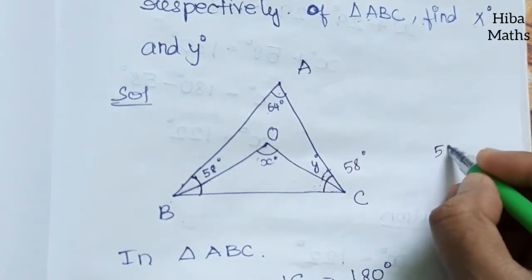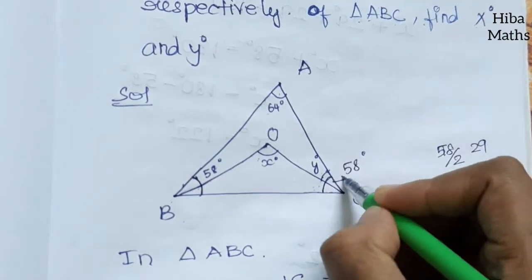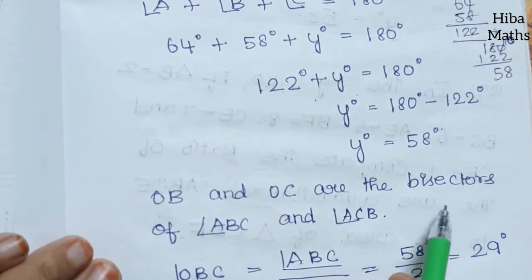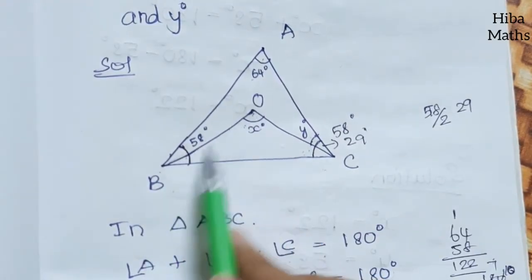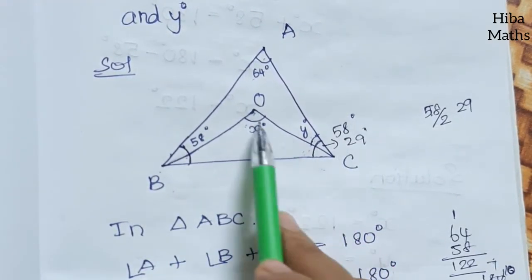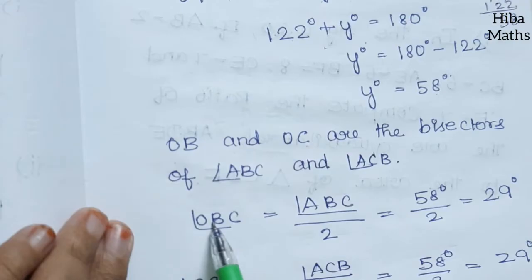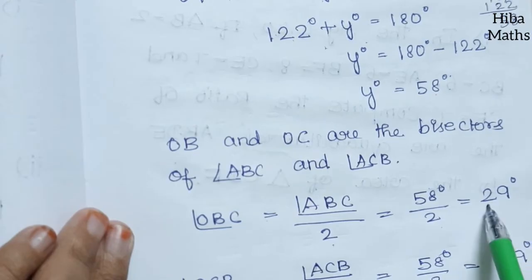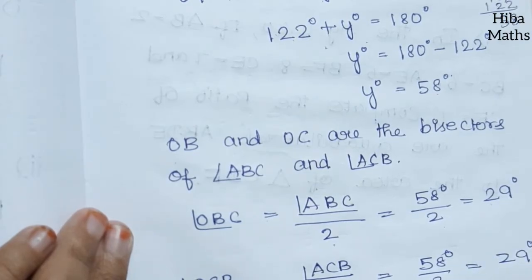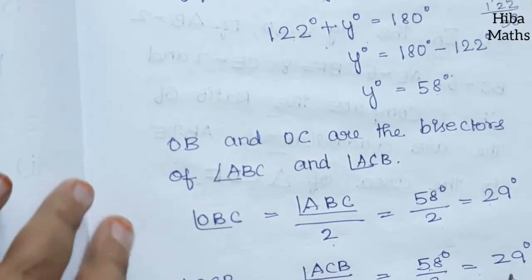Now, since OB and OC are the bisectors of angles ABC and ACB respectively, angle OBC equals angle ABC divided by 2, which is 58 divided by 2, equal to 29 degrees. Similarly, angle OCB equals angle ACB divided by 2, which is 58 divided by 2, also equal to 29 degrees.